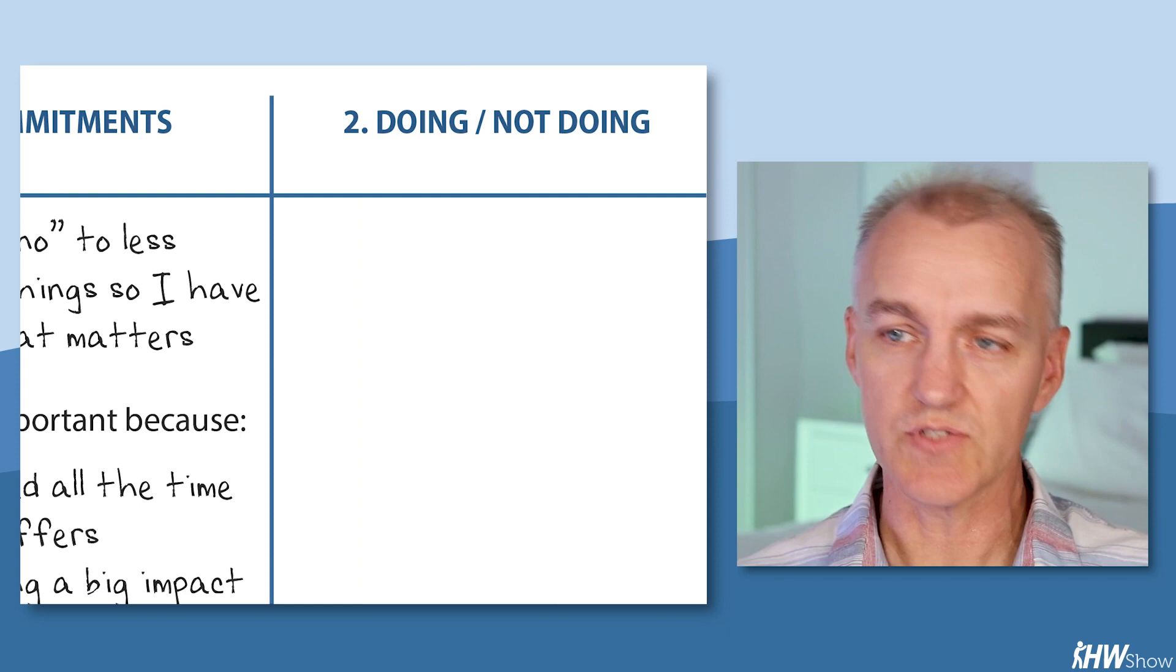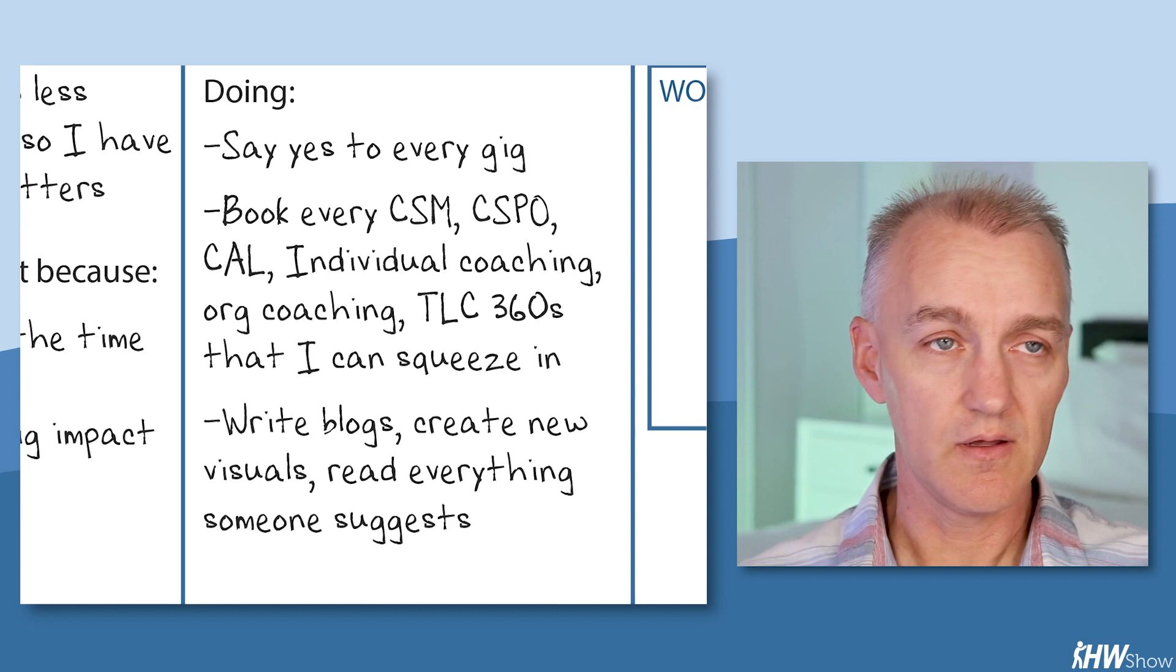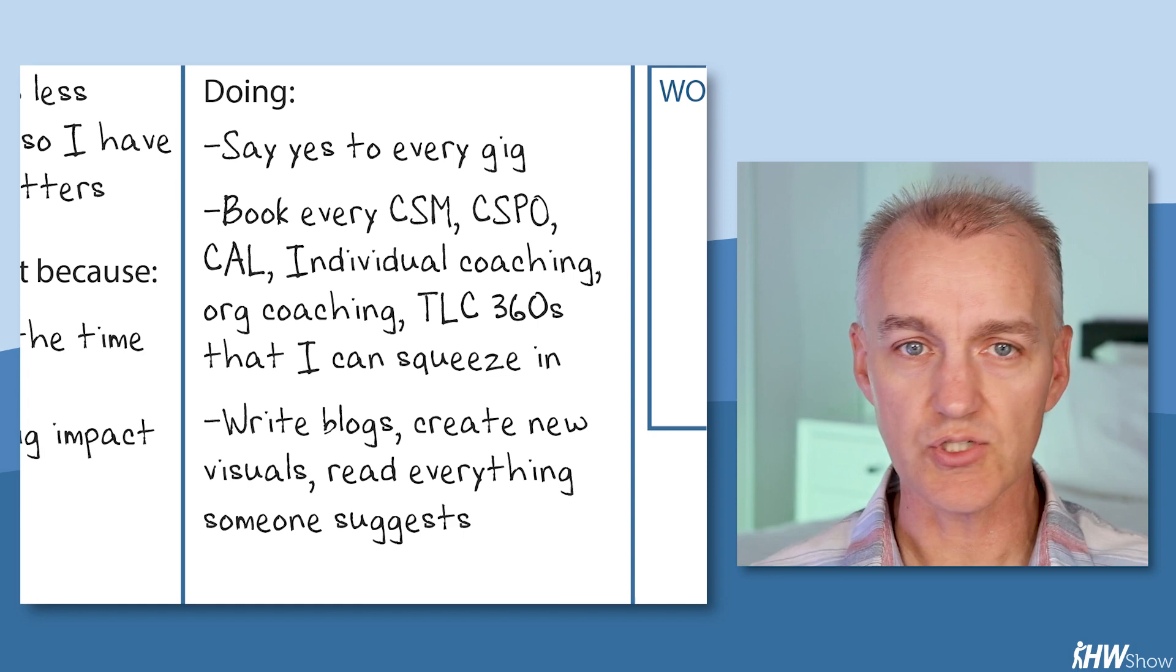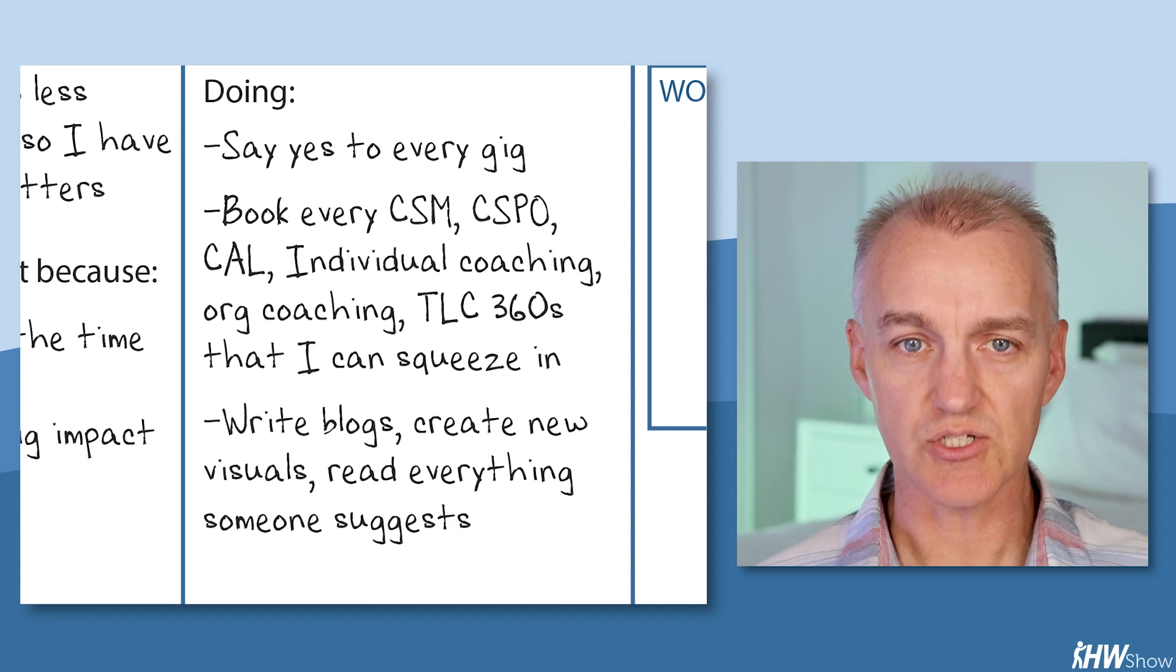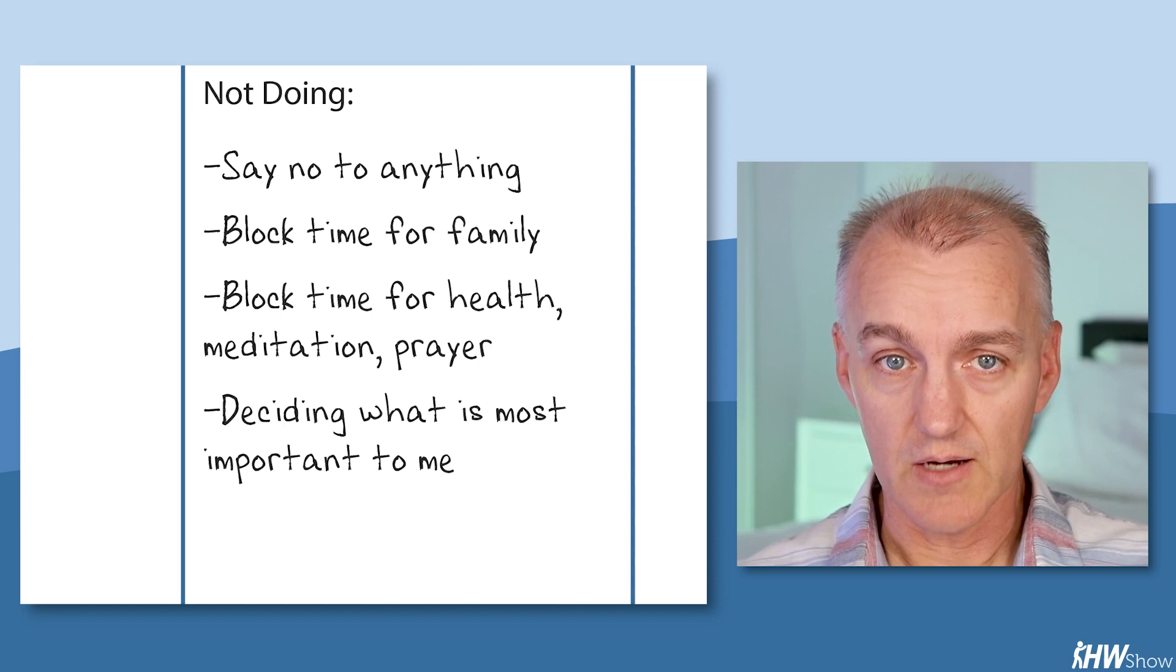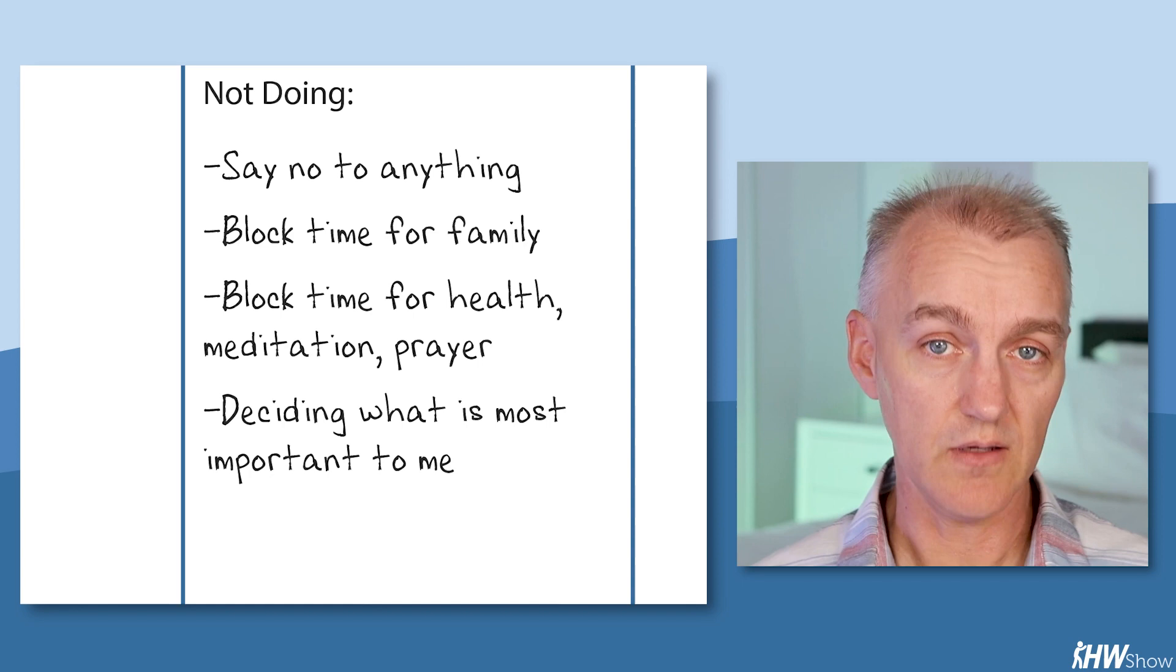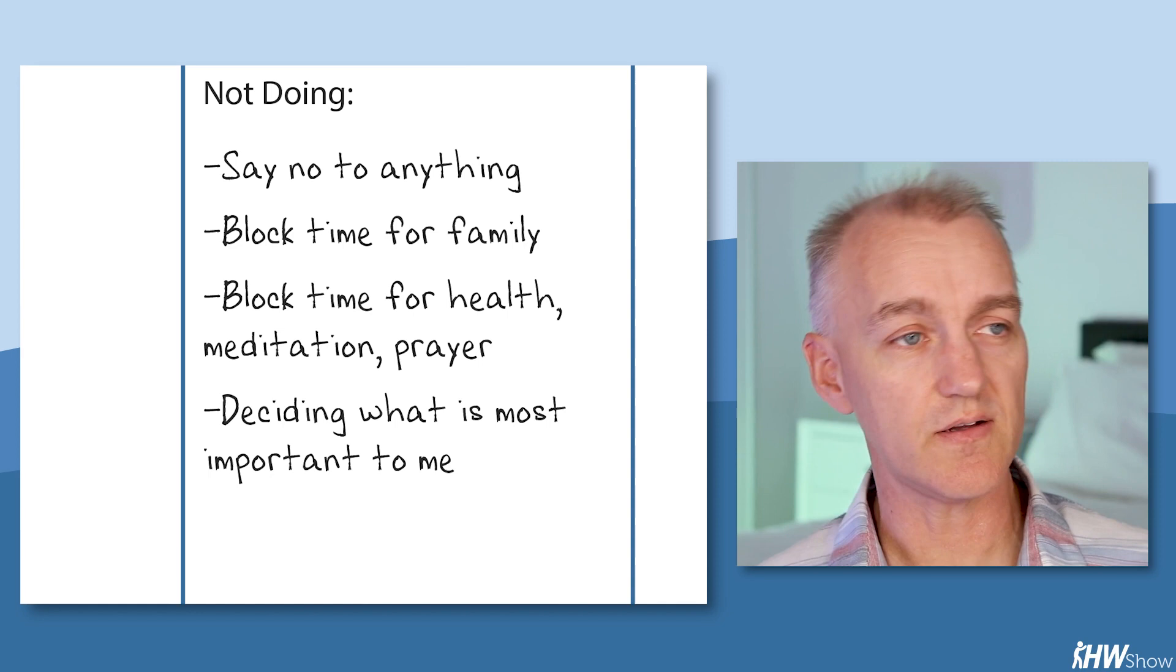Going over to column two, which is where I get to tell on myself all the things I'm doing and not doing that are screwing up my change goal. And this was pretty easy. All the things I was doing, well, I was saying yes to every gig that came in. And I would book every CSM, CSPO, Cal, individual coaching, org coaching, leadership circle 360s that I could possibly squeeze into my schedule. I was writing blogs. I was creating new visuals. I was reading every book that somebody suggested. What was I not doing? Well, I wasn't saying no to anything. I wasn't blocking time out for my family. I wasn't blocking time out for things that mattered to me, like my health or meditation or prayer. And I wasn't deciding what's most important to me. By default, I was saying everything is equally important.